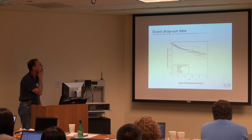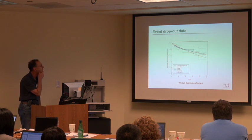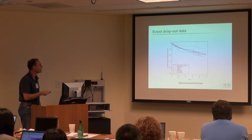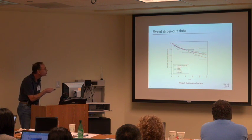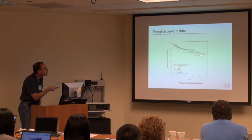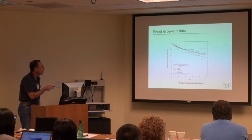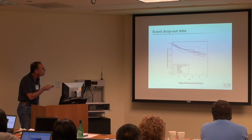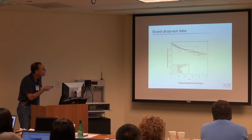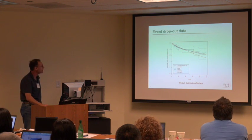Here's the event dropout data shown in the same type of plot. For the dropout data, the Weibull distribution fit the best — that's the green curve. The exponential didn't perform well in this situation either.